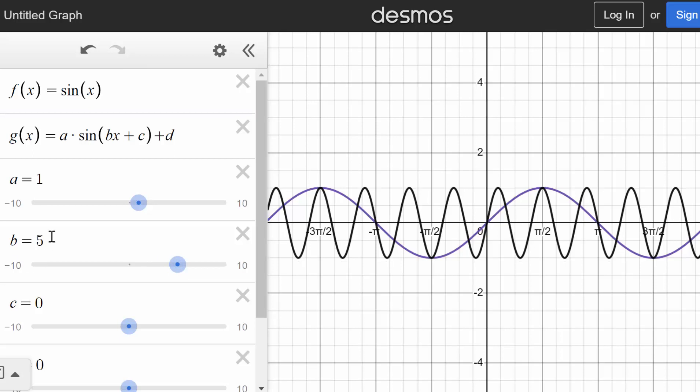Essentially, if let's say b is 5, then the period is 1 fifth the period of the original function. So whatever b is, we are dividing the period of the parent function by that b value to get the period of the new function.